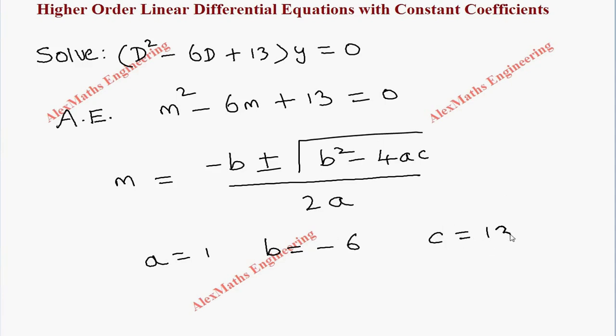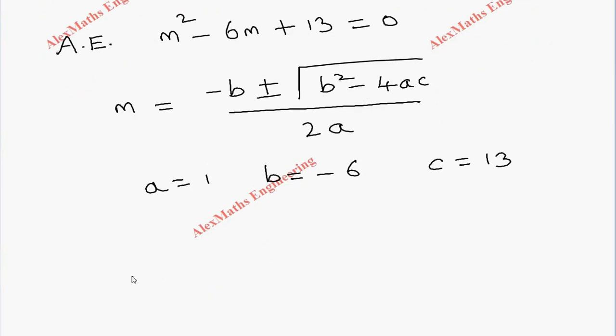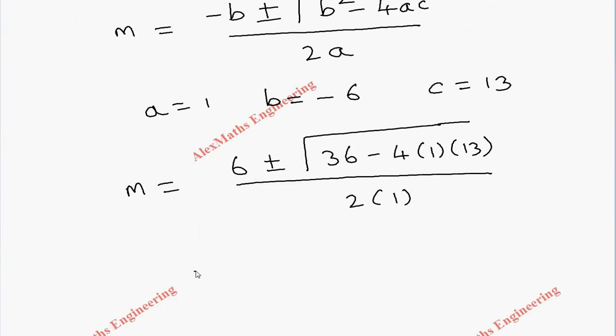By substituting this we get m = -b which is 6 ± √(b²), (-6)² is 36 - 4ac, whole divided by 2a, so 2 × 1.